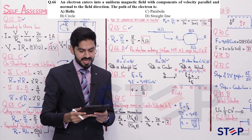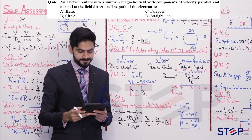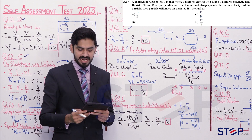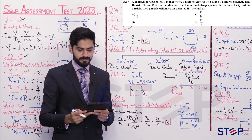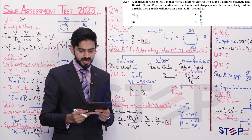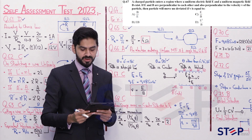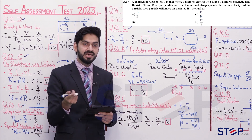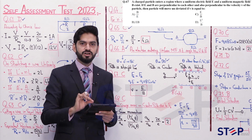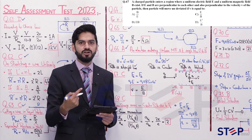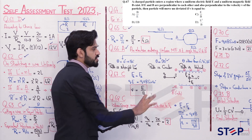So question 66's best answer is option A — helical path or helix. Question 67: A charged particle enters a region where uniform electric field E and uniform magnetic field B exist, perpendicular to each other and to the particle's velocity V. The particle moves undeviated if V equals? This is related to the velocity selector.